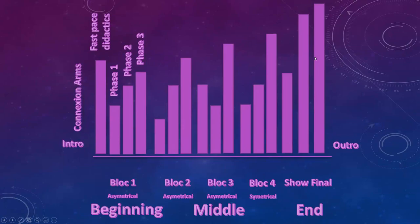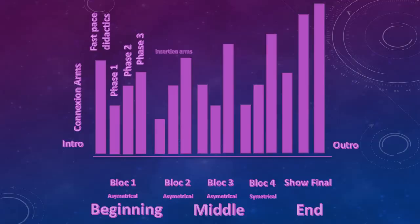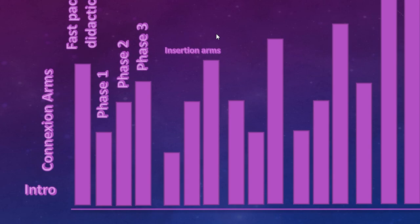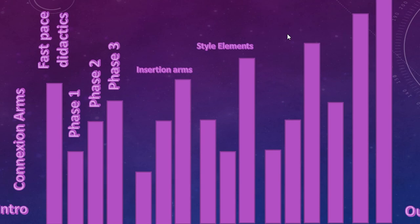In my final show I do progressive energy levels, and then in the outro I explode at the end. In my second block I always do what we call the insertion of arms — I'm teaching them how to use the arms. Then in the third block they apply them. In the third block we also place style elements which put a little bit of spice in the choreography.